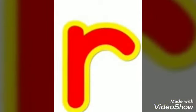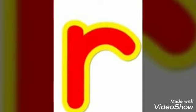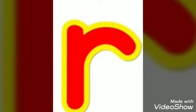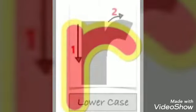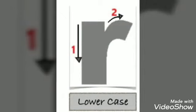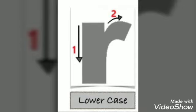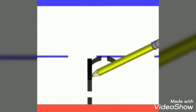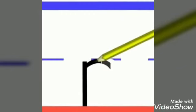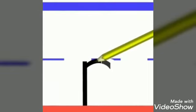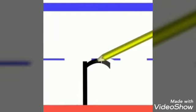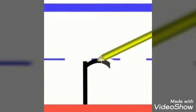And this is your lowercase or small letter R. See how to write it. There are two steps to write a lowercase R. First step is to make a small standing line from up to down. And then, on the upper side of the standing line, you have to make a small curve like this. This is your small letter R.